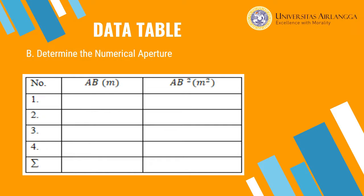This slide informs you about the worksheet for the second process. The second process is to determine the numerical aperture. You can write four data points or more and then place your data in this worksheet. Hope you succeed in this process.